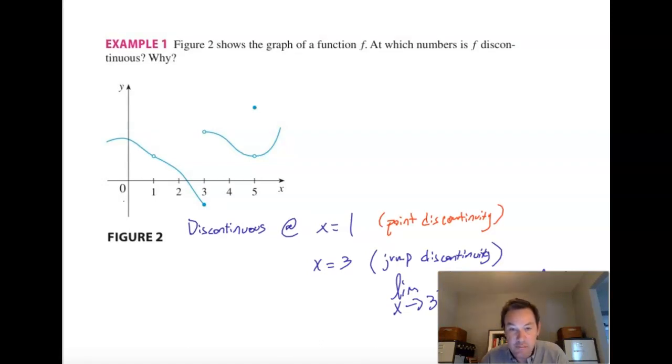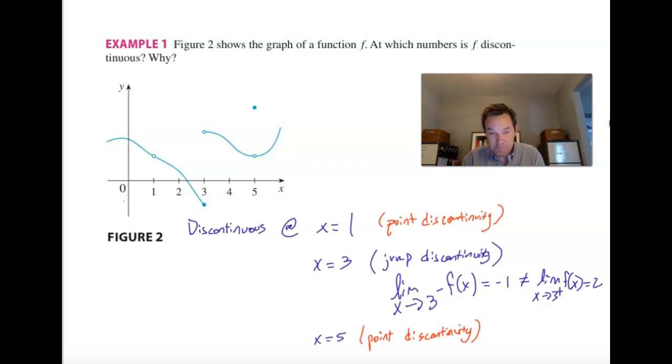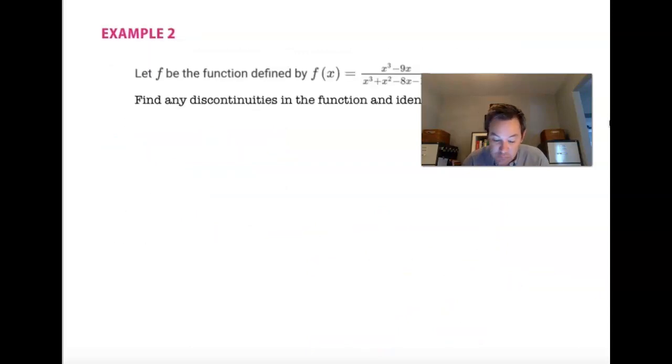And then we have one more discontinuity at x equals 5. And again, that's another point discontinuity.